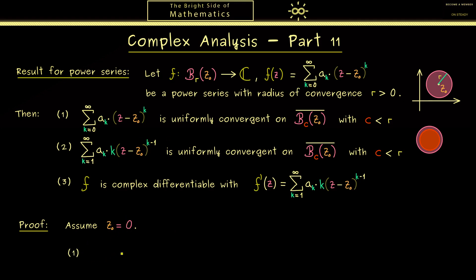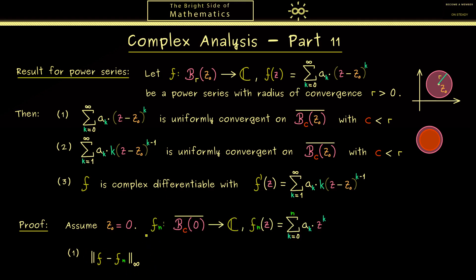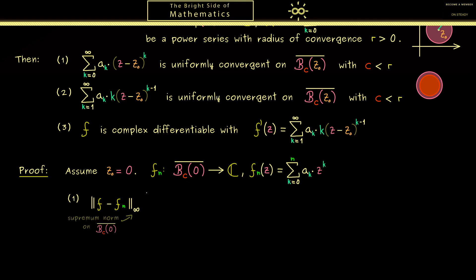Let's start with the proof of part 1. We need to show uniform convergence, so we consider the difference f minus fn in the supremum norm, where fn is the polynomial given by the partial sum. The domain is a closed ball inside the domain of convergence. We write this as the supremum over all z in the closed ball of the absolute value of f minus fn of z, which is our power series starting with index n plus 1.